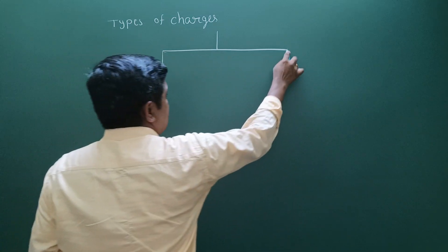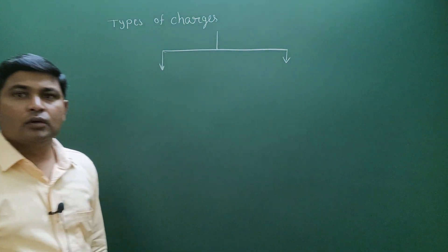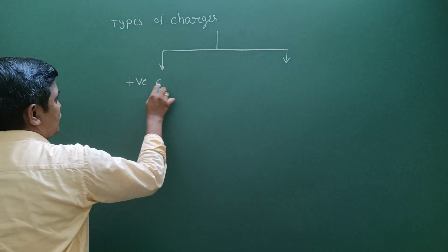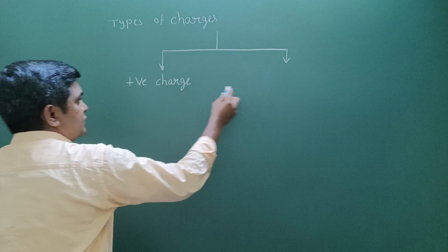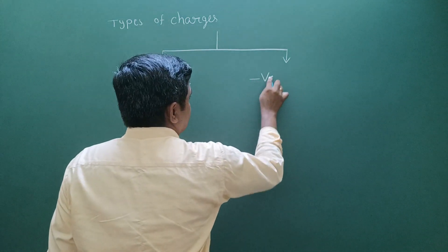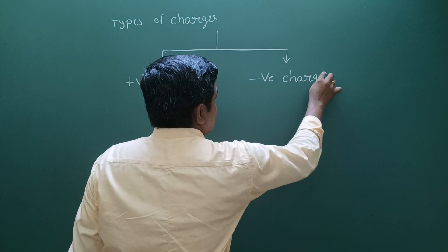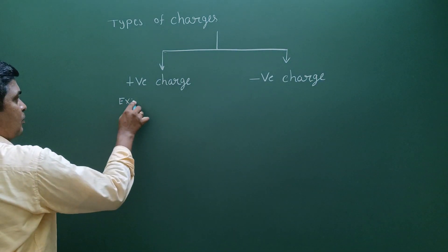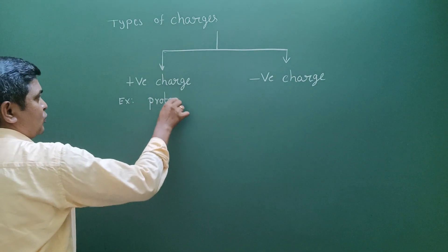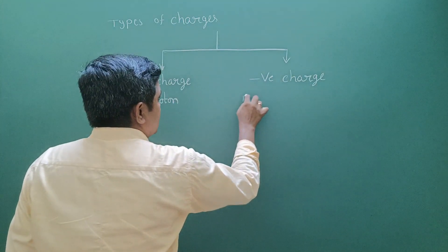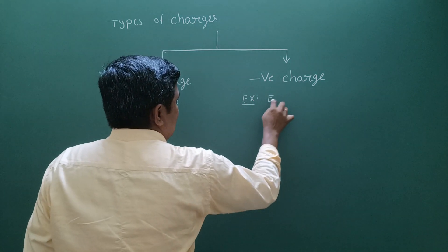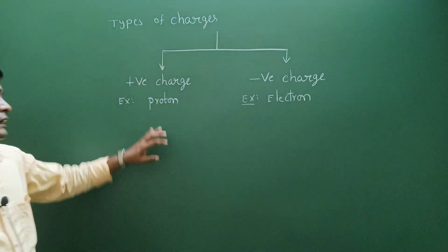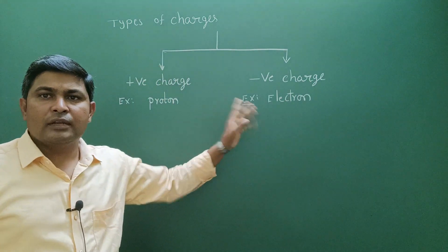There are two types of charges. One is a positive charge, and another one is a negative charge. The example of a positive charge is a proton, and the example of a negative charge is an electron.